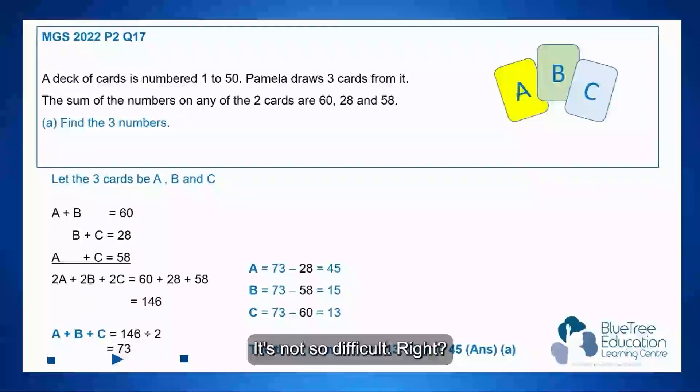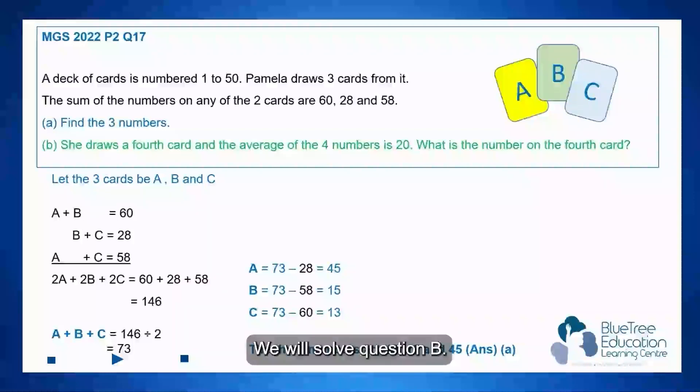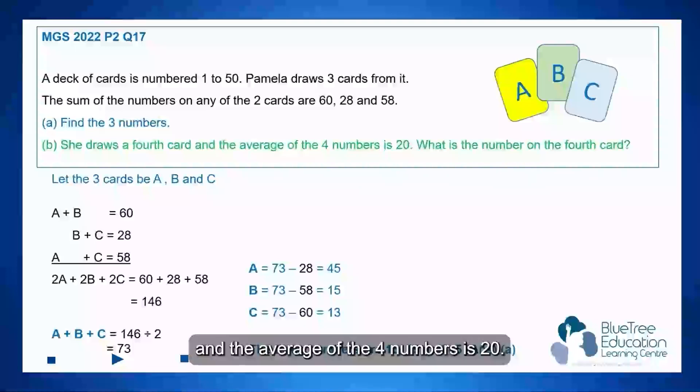It's not so difficult, right? Are you ready? We will solve question B. She draws a fourth card and the average of the four numbers is 20. What is the number on the fourth card?